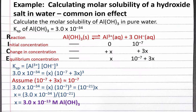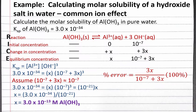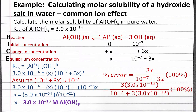Let's check if this assumption is valid. We removed 3x from our expression, so we put 3x in the numerator. The original expression, 10 to the negative 7 plus 3x, goes in the denominator. Plugging in x equals 3.0 times 10 to the negative 13 molar, we get 9.0 times 10 to the negative 4th percent — much smaller than 5%, so this assumption is valid. Our molar solubility is 3.0 times 10 to the negative 13 moles of aluminum hydroxide per liter of solution.